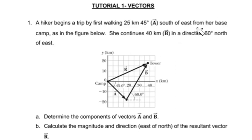And then from a base camp, as in the figure below, so we're going to use this figure. Good. So this is vector A. And now it says she continues 40 km, that is vector B, which is this one here, in the direction of 60 degrees north of east. So we already have all of that.